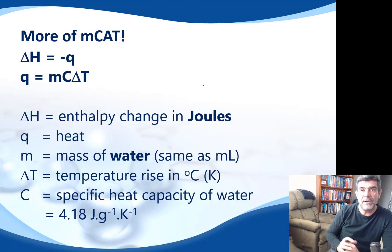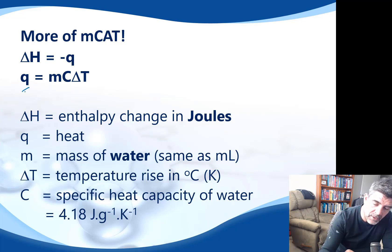So this is a revisiting of the MCAT equation. In this case, we know that the heat flow that is going to occur from the reaction through into the water is going to be found by the formula MC delta T. We know that M will be the mass of the water, the temperature rise of the water is delta T, and the C is the specific heat.